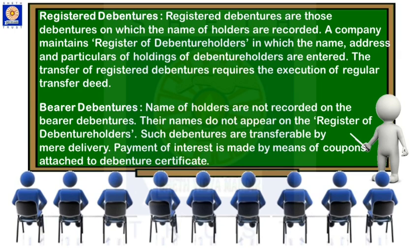Bearer debentures are completely opposite to registered debentures. Here, there is no name written on the debenture certificate and no books are maintained. If a person holds a bearer debenture, he can sell or transfer it by mere delivery — that is, hand to hand — and does not need to follow transfer procedures. In this type of debenture, interest coupons are attached with the debenture certificate, so whoever is holding the certificate holds the interest coupons and can receive interest by showing the coupons to the company.